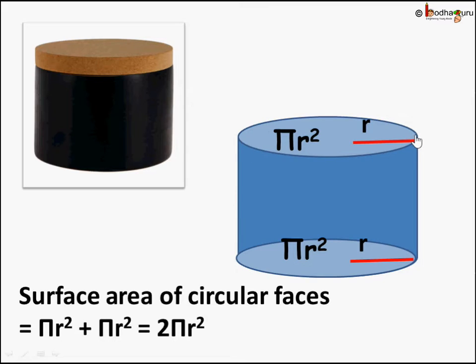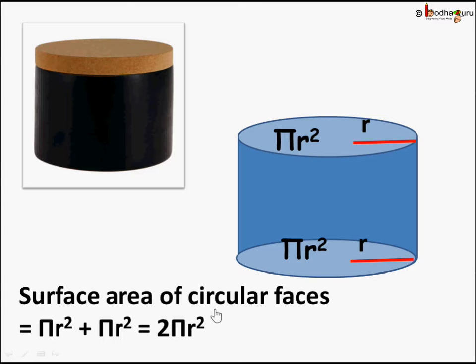The area of one circular face is πR² because it is a circle with radius R, and the other is also πR². So it's πR² + πR² = 2πR², where π is 22/7.